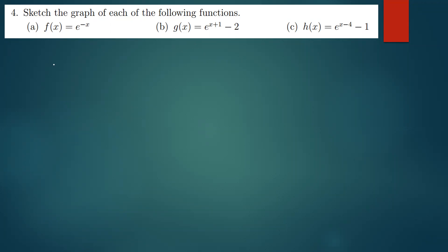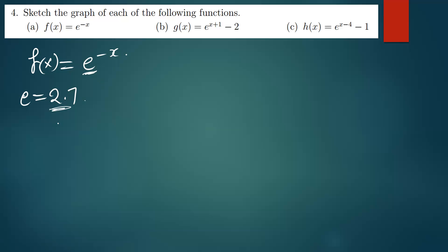We have f of x equal to e to the power negative x. Now e should not confuse you — this is just a number. On a calculator it is something like 2.718 going up, so I'm going to take e as approximately 2.7. When you see e, think 2.7.